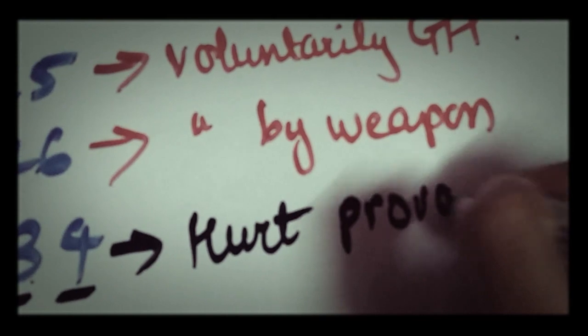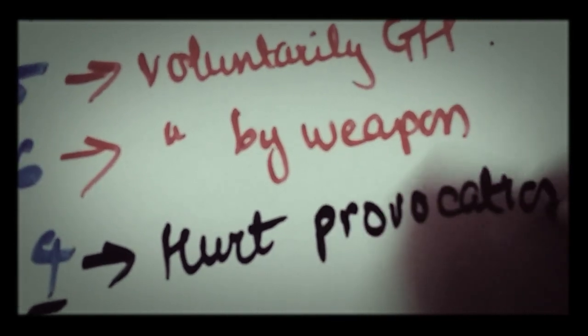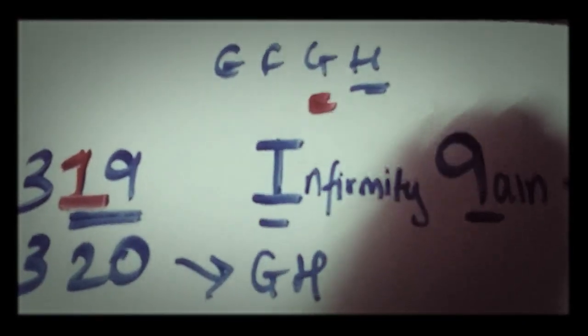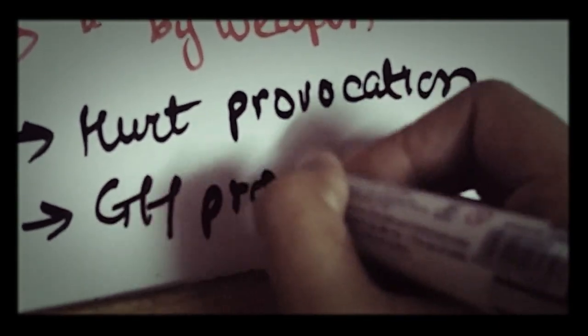And it's kind of complicated, but so this is hurt by provocation, and after that comes grievous hurt. Like we said, after H comes GH, so grievous hurt by provocation is 335.